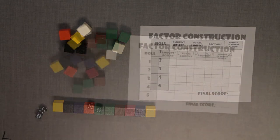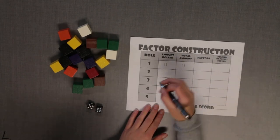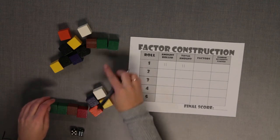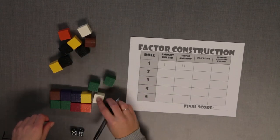The next player rolls the dice. This player rolled a six and a five and writes eleven on the recording sheet. Since you rolled a prime number, you can only find one factor pair. Write the factor pair on the recording sheet.